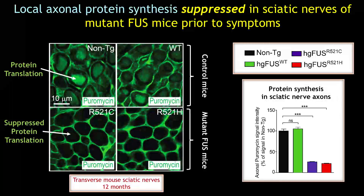We saw that puromycin incorporation was significantly lower in the axons of mutant FUS mice despite equal accumulation in the surrounding myelinated cells. This correlated with an increase in the integrated stress response in the sciatic nerve, shown by increased phosphorylation of EIF2-alpha, and all this occurred before disease symptoms. This is likely due to the increased accumulation of mutant FUS in axons.